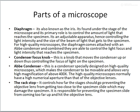In some advanced microscopes, you also have an Abbe condenser, specially designed for high-quality microscopes, which makes the condenser movable and allows very high magnification of about 400x. There is also a rack stop, which controls how far the stage can move, preventing the objective lens from getting too close to the specimen slide and potentially damaging it.